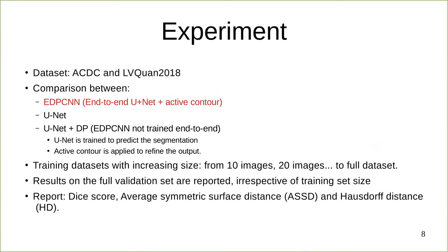For experiments, we test on the left ventricle segmentation task on the ACDC and LVQuant 2018 datasets. We compare three models: EDPCNN, which is our model; U-Net; and U-Net plus differentiable bypass, which is EDPCNN but not trained end-to-end — here U-Net is trained to predict the segmentation and then the active contour is applied to refine it. We use training datasets of increasing size: 10 images, 20 images, and the full dataset. Results are reported on the full validation set. We report three metrics: DICE score, AACD, and HD.